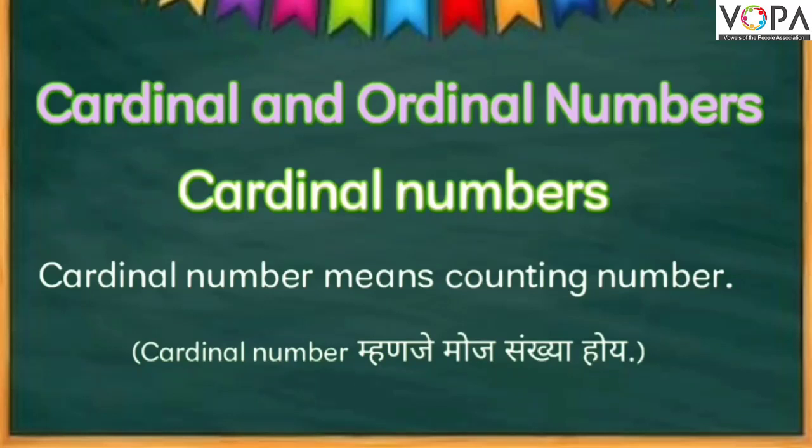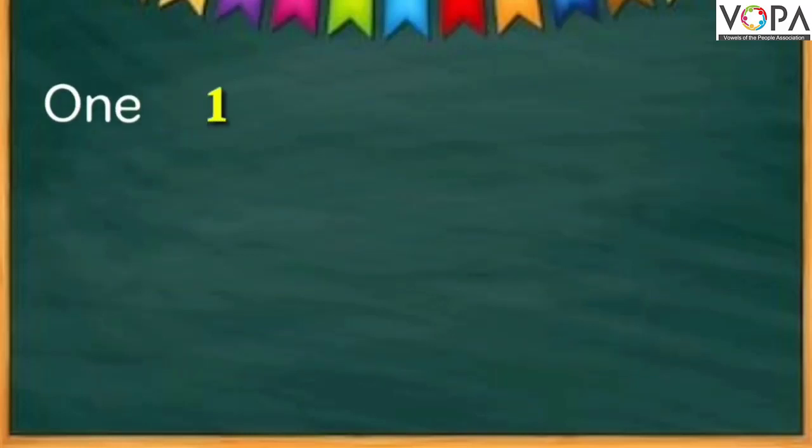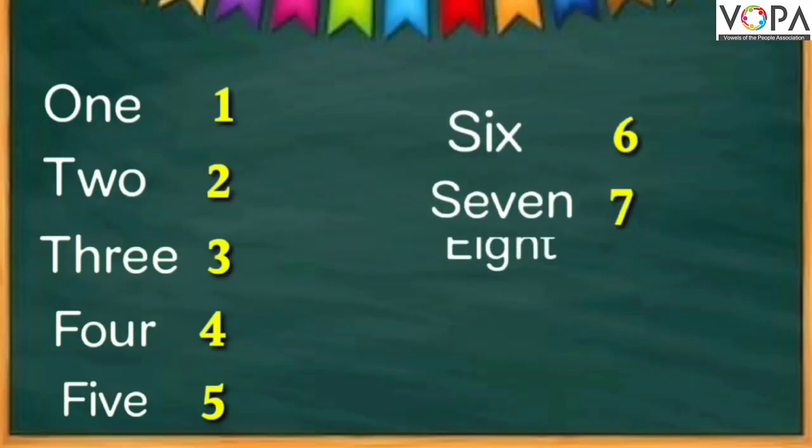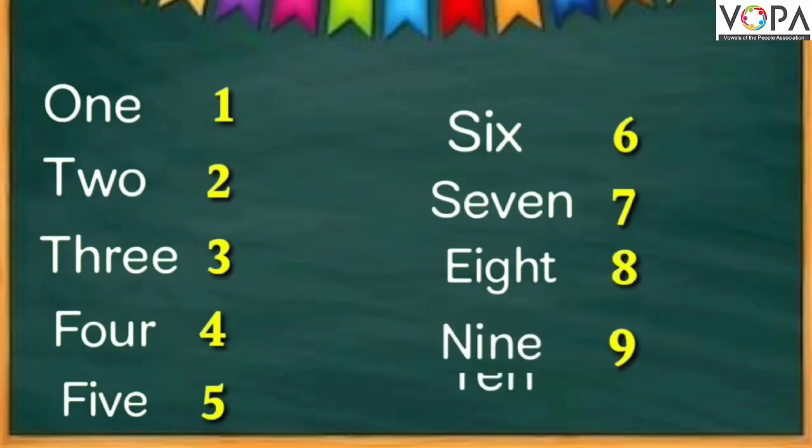Now we will see how to write cardinal numbers correctly: 1, 2, 3, 4, 5, then comes 6, 7, 8, 9, 10.